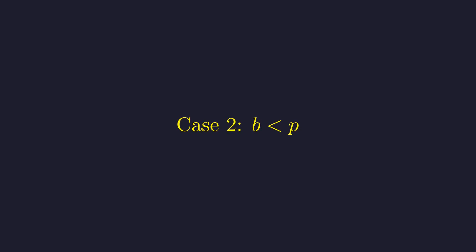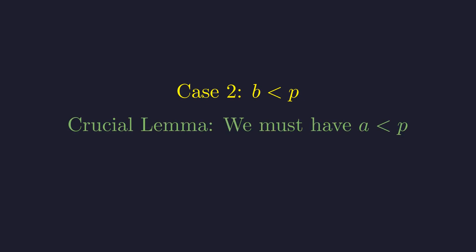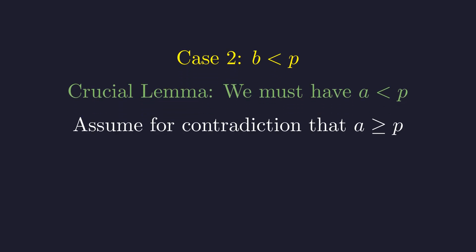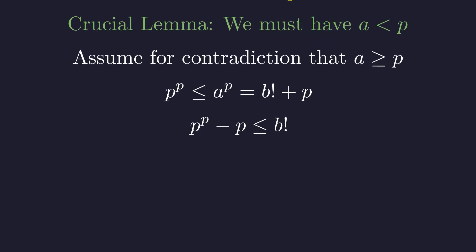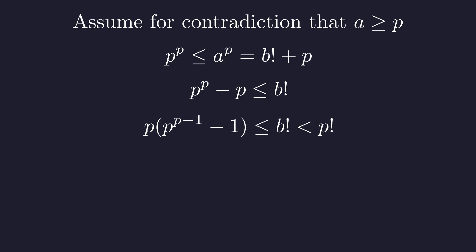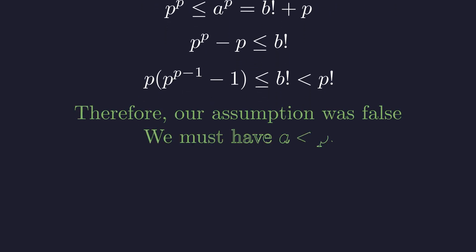Now for our second case where B is strictly less than the prime P. We must establish a crucial bound on A and prove that A must also be less than P, using proof by contradiction. Assuming A is greater than or equal to P, then A to the power of P is at least P to the power of P. Rearranging, P to the power P minus P must be less than or equal to B factorial. However, since B is less than P, B factorial is strictly less than P factorial. For any prime P greater than or equal to 2, the term P times P to the P minus 1 minus 1 is far larger than P factorial — a clear contradiction. Therefore, A must be less than P.